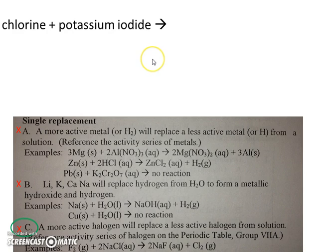So by default, it's going to be similar to template C. But we should probably read that just to make certain. A more active halogen will replace a less active halogen from solution.